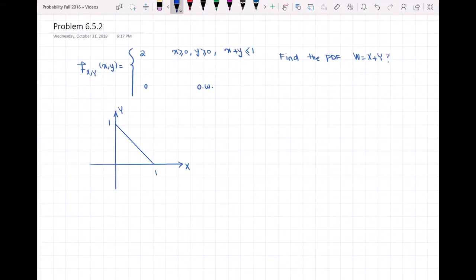Hello everyone. In this video, I want to solve problem 6.5.2, which is from the problems at the end of chapter 6. This problem is on joint PDF. We have the joint PDF of X and Y, and we want to find the PDF of W, where W is equal to X plus Y.